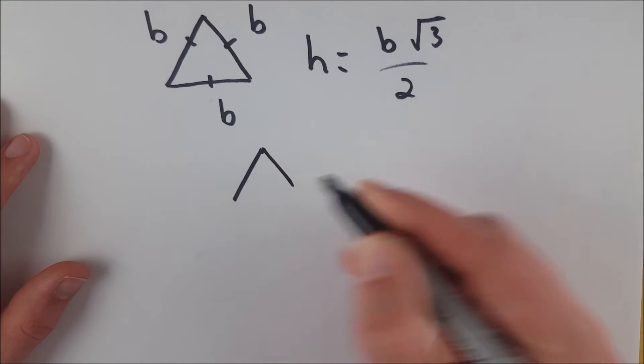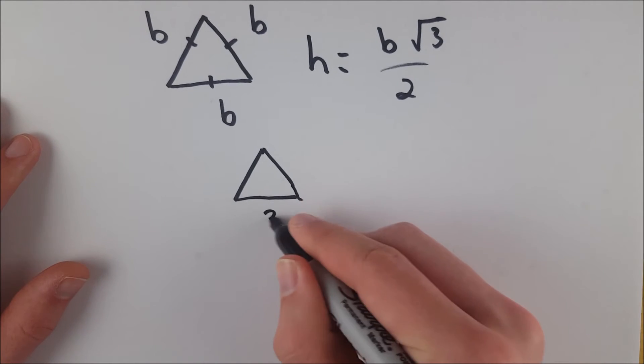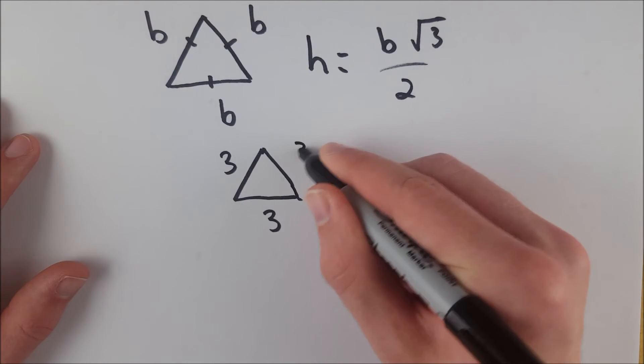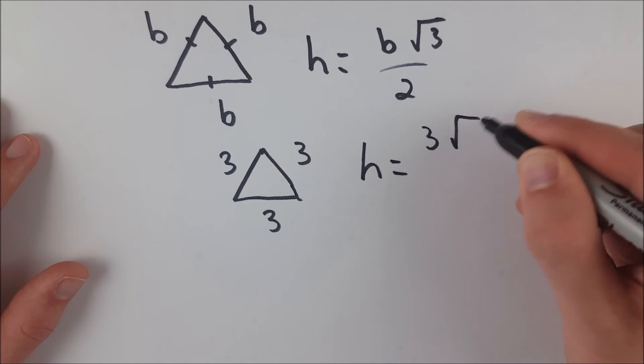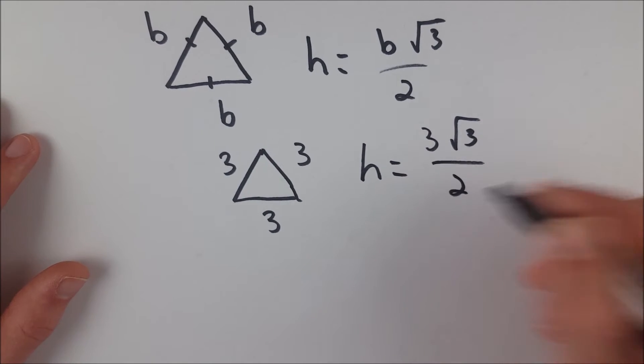So let's say we had an equilateral triangle like this and it has side lengths of 3. Then the height is equal to 3 multiplied by the square root of 3 over 2.